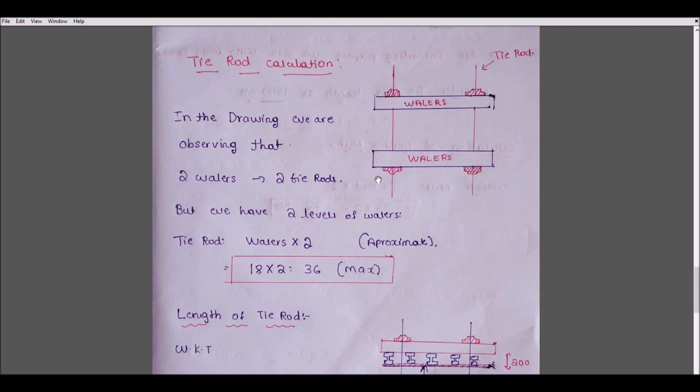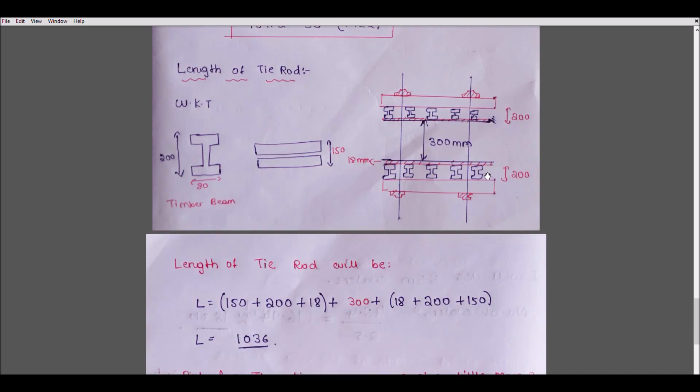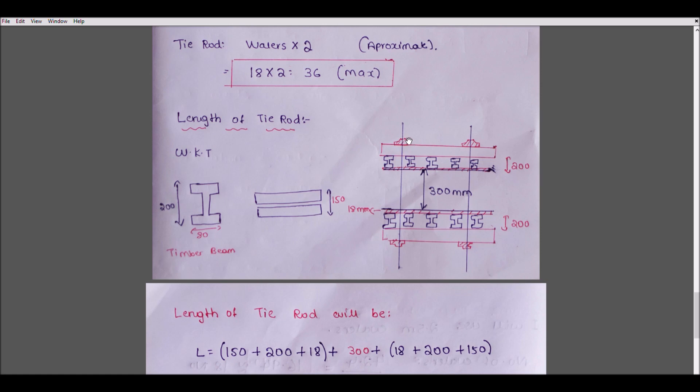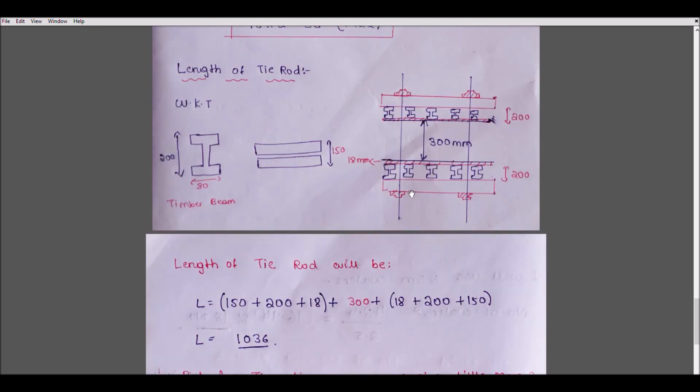Now consider the length of the tie rod. Know your materials first: 300mm wall thickness, 18mm plywood, 200mm timber beam, 150mm wailers. So add this: 150 + 218 + 150 + 218 + 300 + 18 + 200 + 150 = 1036mm. But we need some gap for threading, so we consider 200mm extra. We will use 1.2-meter length tie rods, 36 numbers.